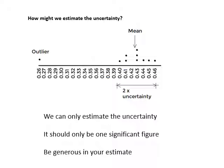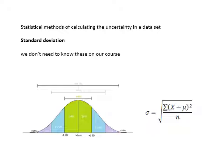You should always be generous in your estimate. If you work it out and it's kind of 0.47, then you say it's 0.5. Be generous in your estimate of uncertainty. There are statistical ways of doing it - we don't do standard deviation, you will do it in maths. The uncertainty is kind of equal to the standard deviation.